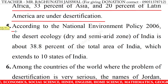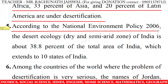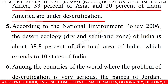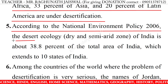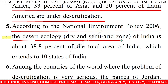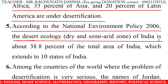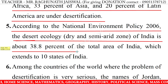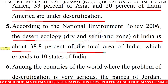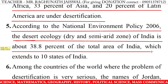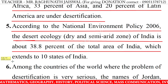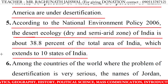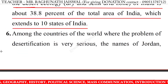5. According to the National Environment Policy 2006, the Desert Ecology Dry and Semi-arid Zone of India is about 38.8% of the total area of India, which extends to 10 states of India.